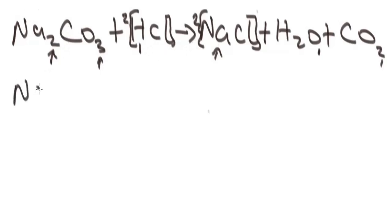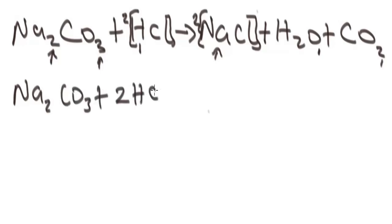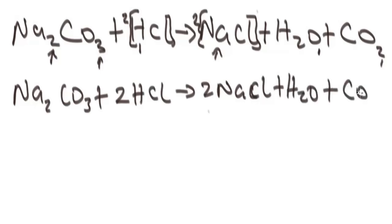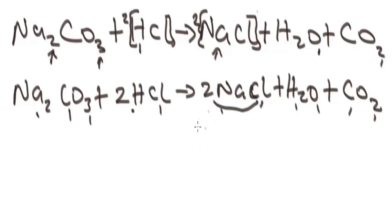Let's write the balanced equation properly: Na₂CO₃ plus 2HCl gives us 2NaCl plus H₂O plus CO₂. Let's verify: sodium here is 2, sodium here is 2. Carbon here is 1, carbon here is 1. Oxygen here is 3, oxygen here is 3 — this 2 plus this 1, that's 3. Hydrogen is 2 here, hydrogen is also 2. Chlorine is 2, chlorine is also 2 because this 2 is affecting chlorine. So this equation is now balanced — that is the balanced chemical equation using inspection method.